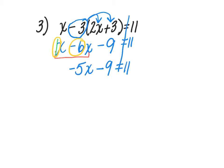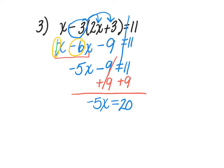Now it's time to get those constants together on the other side. I want to get rid of that minus 9, so I'm adding 9 to both sides. After adding 9 to both sides, I get negative 5x = 20. Now I divide by the coefficient, which is negative 5 — I need to divide by the negative as well. Dividing both sides by negative 5 gives x = 20 ÷ (-5) = -4. My solution is negative 4.